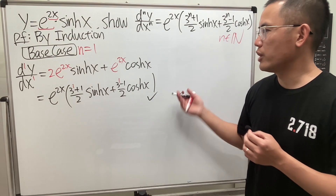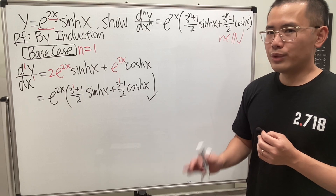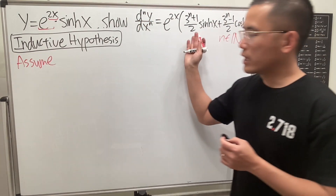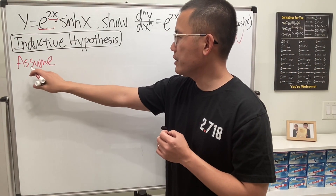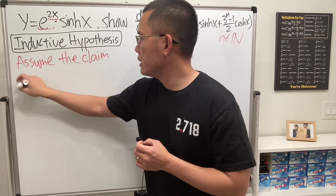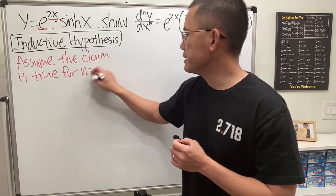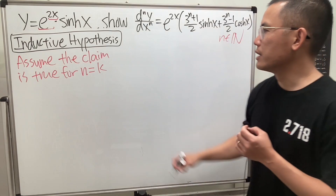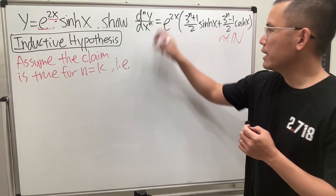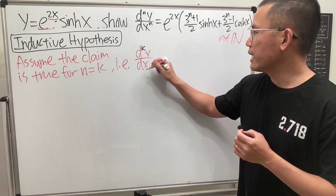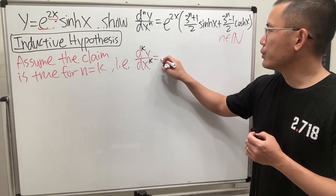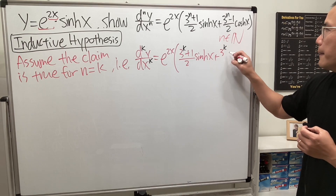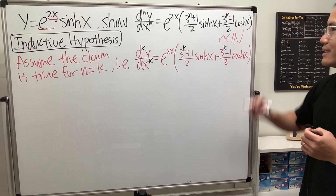So the base case checks out — put a check mark. Now we write down the inductive hypothesis: assume the claim is true for n equal to k. That means we take the formula and replace all the n's with k. So the k-th derivative, d-k y over dx-k, equals e to the 2x times 3 to the (k+1)/2 sinh of x plus 3 to the (k−1)/2 cosh of x.